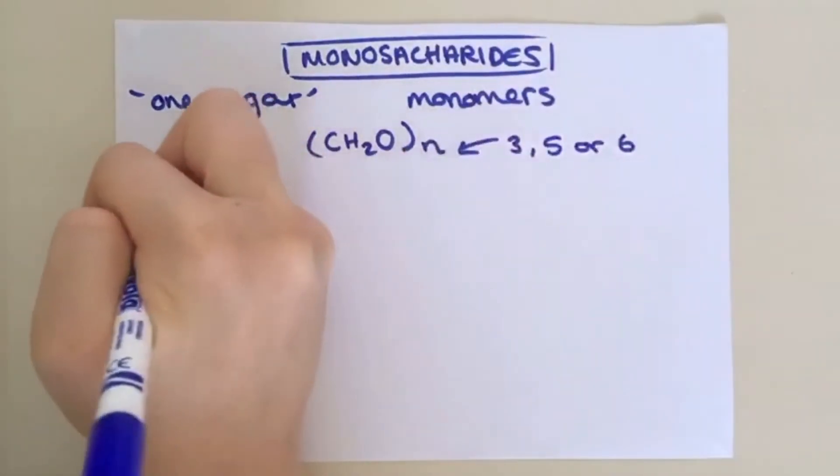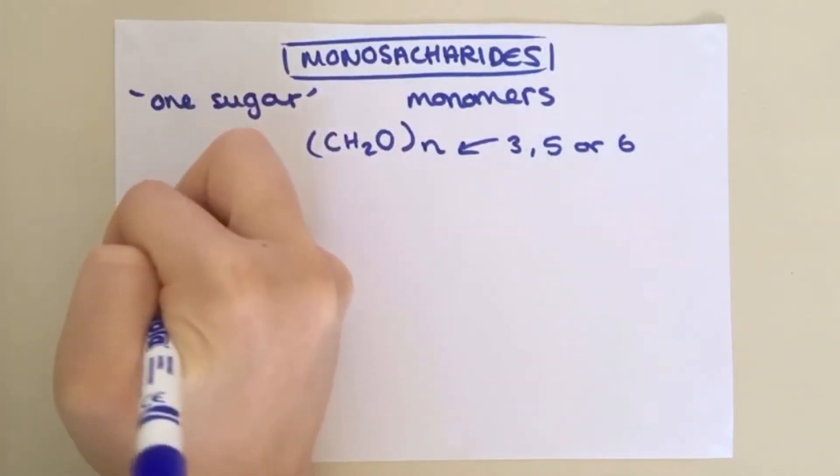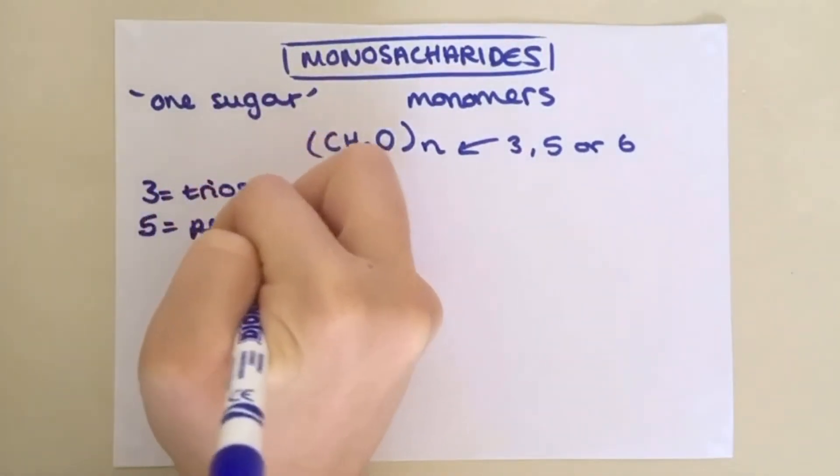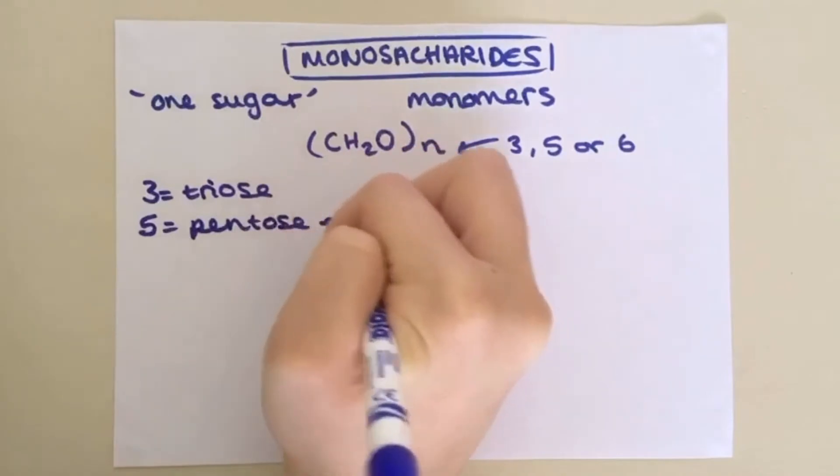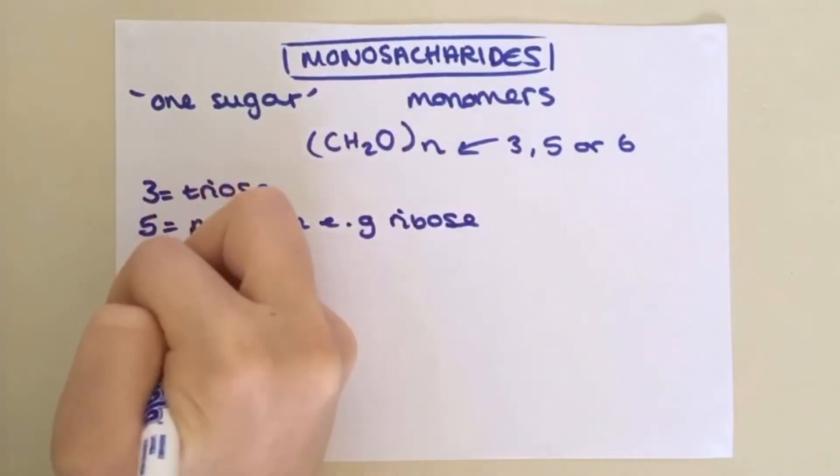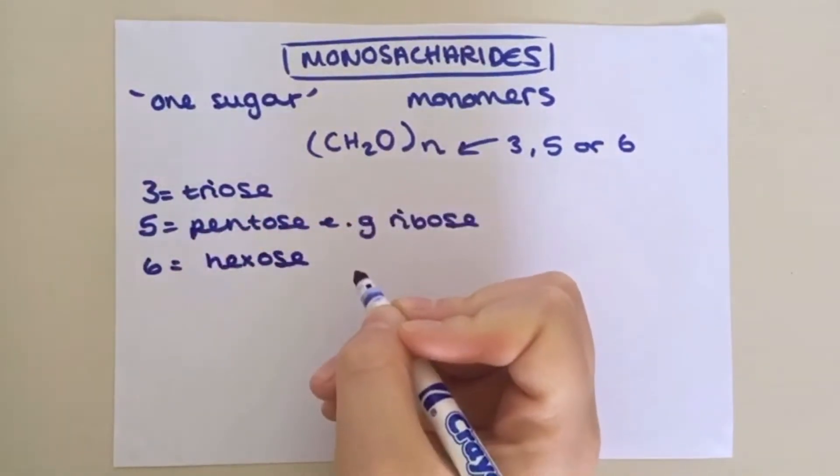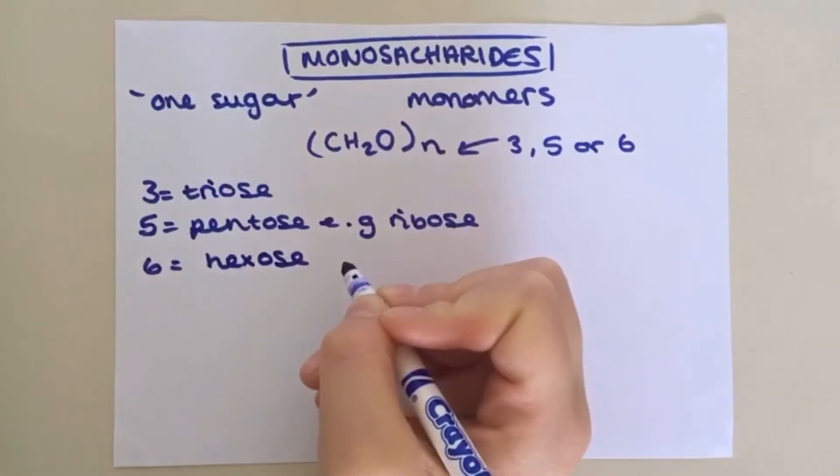Monosaccharides with three carbon atoms are called triosugars. Those with five carbon atoms are called pentosugars, for example ribosugar found in RNA and ATP. However, the most important type of monosaccharide that we need to know about is those with six carbon atoms, given the term hexose.